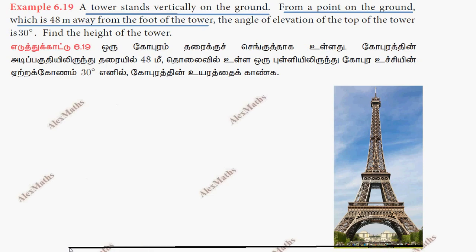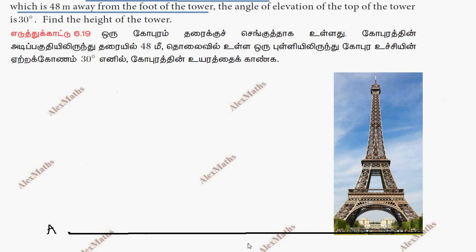Okay, so 48 meter is a point. We have a point A. This distance is 48. So this is 48 meters.